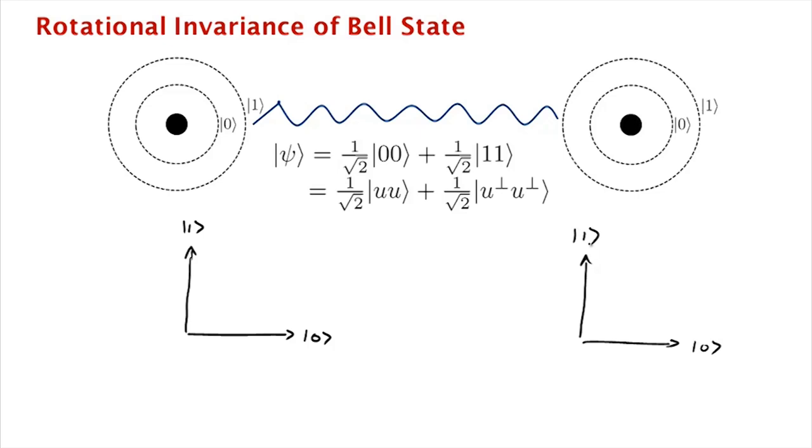Now what we could do is we could rotate this basis by an arbitrary angle. And so we get some rotated basis like this, u, and then this state which we'll call u perp.